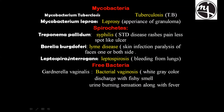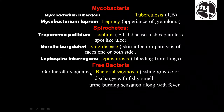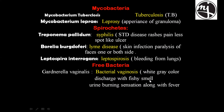Leptospira interrogans causes leptospirosis, which includes bleeding from the lungs. Finally, Gardnerella vaginalis causes bacterial vaginosis, characterized by white-gray color discharge with a fishy smell, along with urine burning sensation and fever.